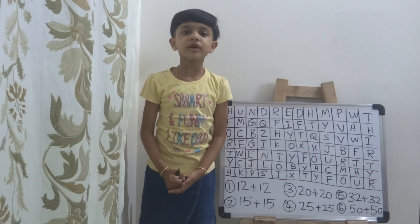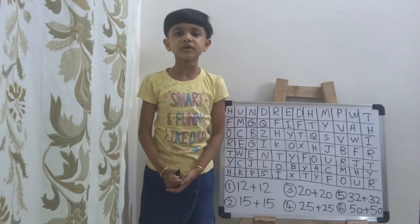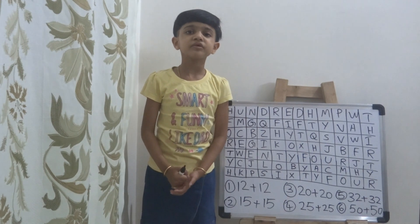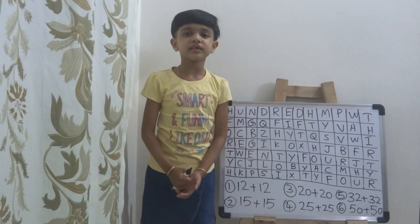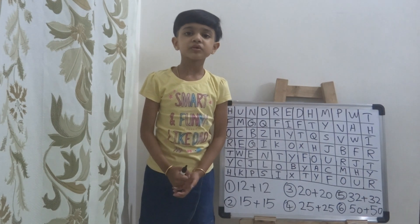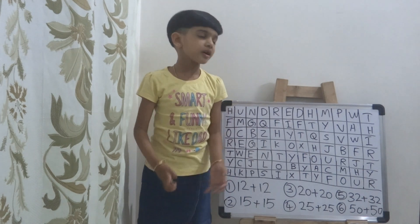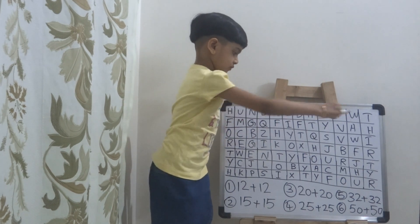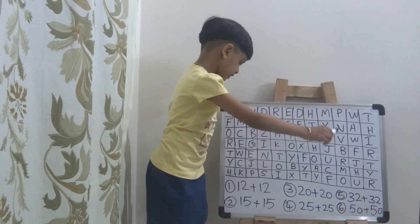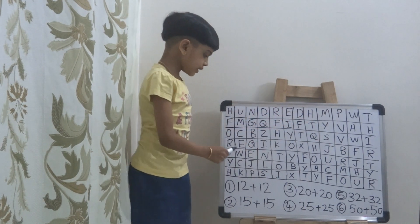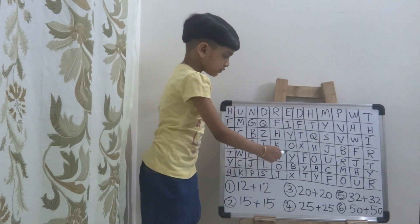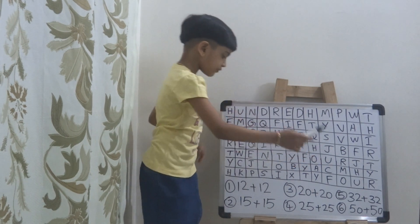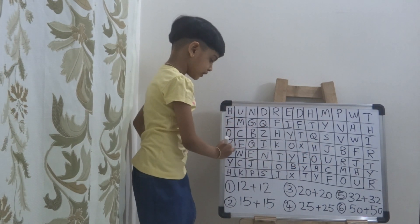Do you know what is the spelling of 24? I will say T-W-E-N-T-Y F-O-U-R, 24. Let's find out. Look, here it is: T-W-E-N-T-Y F-O-U-R, 24. So you can circle it.